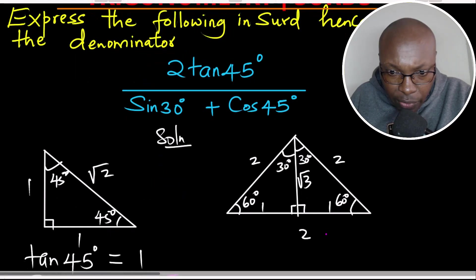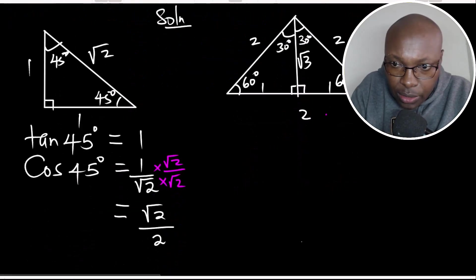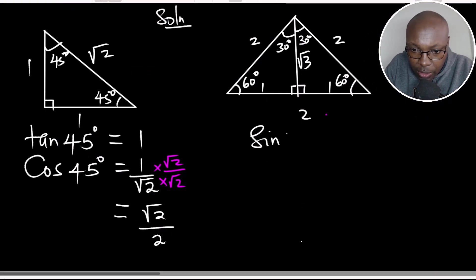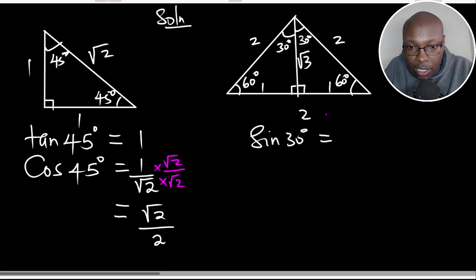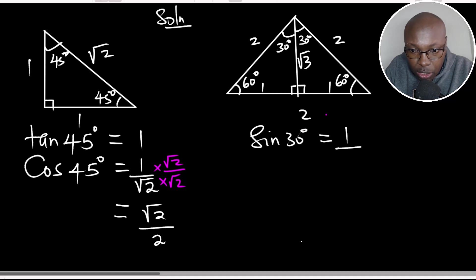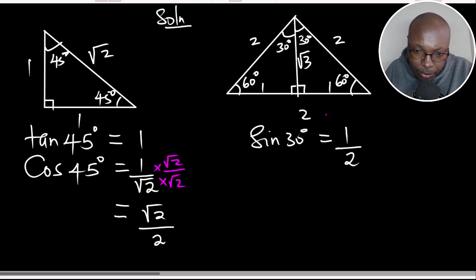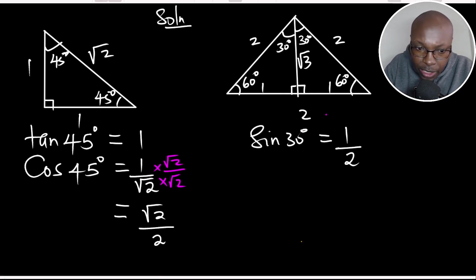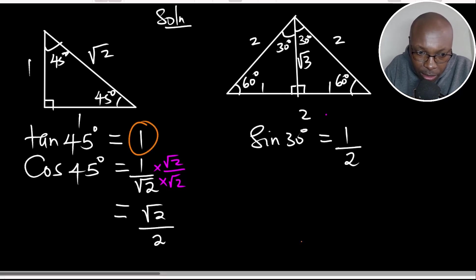Sine of 30 will be obtained from the second triangle. Sine is the opposite side divided by the hypotenuse. Considering the 30-degree angle in the right-angled triangle, the opposite side is 1 and the hypotenuse is 2. So sine of 30 is 1 over 2, which is one half. Now we have everything we need: tangent of 45, cosine of 45, and sine of 30.